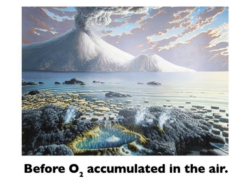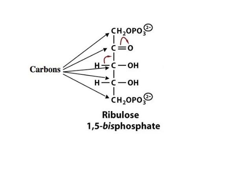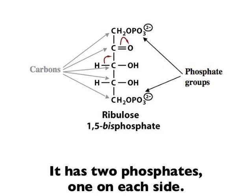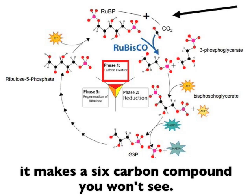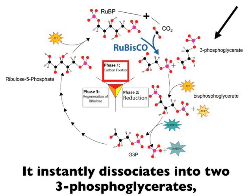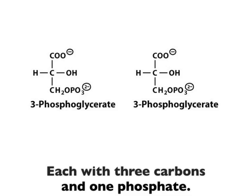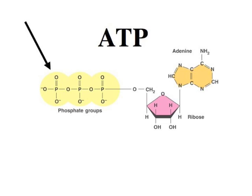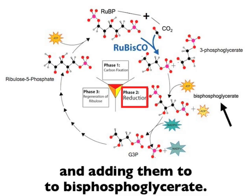Rubisco is ancient — it was already here before O2 accumulated in the air. CO2 enters through the leaf stomata, diffusing through the leaf and arriving in the stroma. Then Rubisco grabs it in its active site and combines it with RuBP. RuBP has 5 carbons with two phosphates, one on each side. When CO2 combines with RuBP, it makes a 6-carbon compound that instantly dissociates into two 3-phosphoglycerate molecules, each with 3 carbons and 1 phosphate. Each gets phosphorylated to bisphosphoglycerate, meaning each receives a phosphate group from ATP. This phosphorylation is followed by reduction — an enzyme takes electrons and H from NADPH and adds them to bisphosphoglycerate, then removes a phosphate to get glyceraldehyde-3-phosphate, a starting point for compounds like carbohydrate.